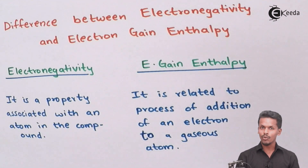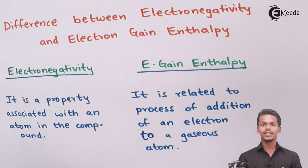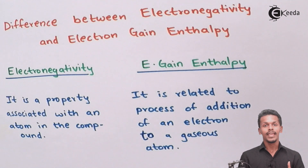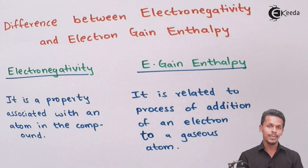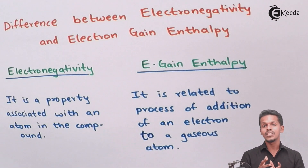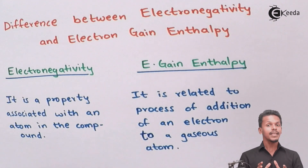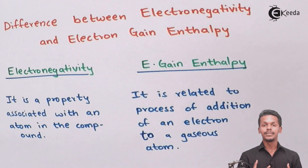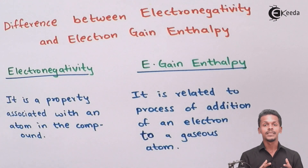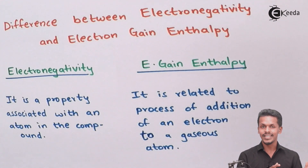Talking about the first difference: electron gain enthalpy is nothing but the change in enthalpy that is accompanied when an electron is accepted by a gaseous atom. The enthalpy change observed during that electron acceptance is known as electron gain enthalpy. Basically, it is related to energy — how much energy is evolved when an electron is gained by an atom present in the gaseous state.